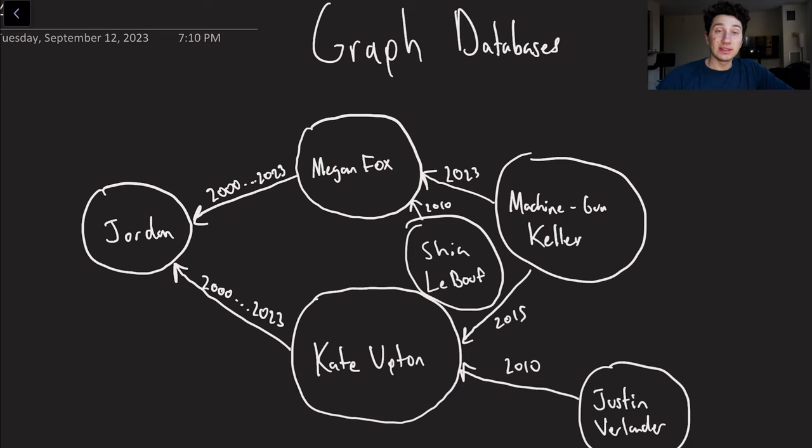Alrighty, so today's video is all about graph databases, which as you may have guessed are specifically useful for holding, storing, and reading and writing quickly graph data. So graph data is anything that is best represented by a bunch of nodes and vertices or edges, whatever you want to call them.